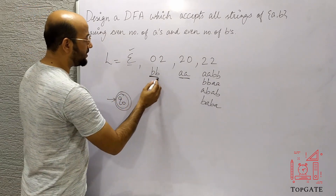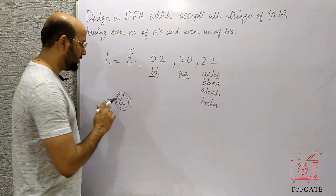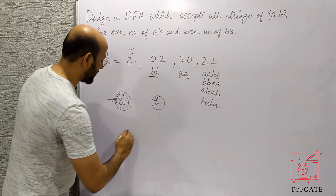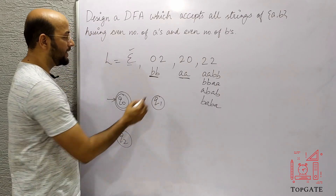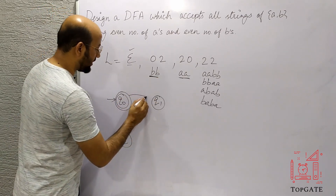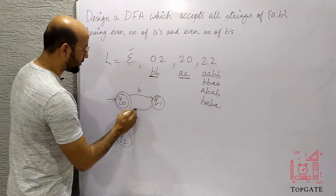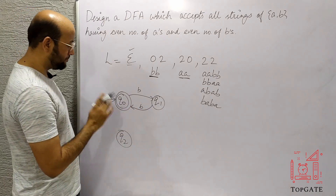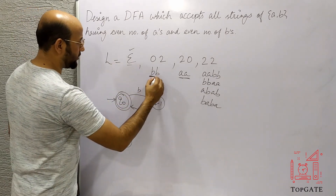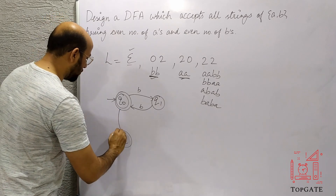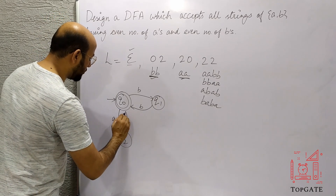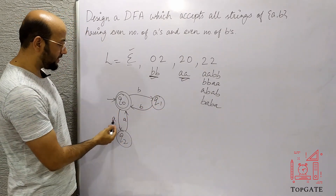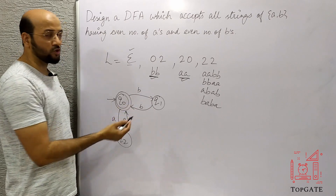We have to accept BB and AA as minimum strings. So I will make some more states, Q1 and Q2. For BB: we go from Q0 to Q1 with B, then come back to Q0 with B — so BB is accepted. For AA: we go from Q0 to Q2 with A, then come back to Q0 with A — so AA is also accepted.